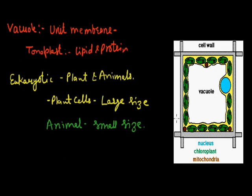This is the plant cell. It has a vacuole in the central position. This whole structure is known as the vacuole. In the case of the plant body, what is the role of vacuoles?